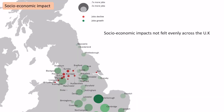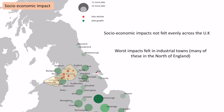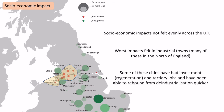As geographers, we know this isn't an even spread across the UK — there will be areas that are worse affected than others. This happened in the north of England, but specifically the northwest, as highlighted here. All of these areas over the last hundred years have seen a huge decline in jobs. Northern industrial towns in general felt the worst effects because they had a high concentration of people working in industry. Some of these cities and towns have had investment, regeneration, and tertiary jobs move in, so they've been able to rebound quicker — it depends on the amount of investment and opportunities put into those areas.